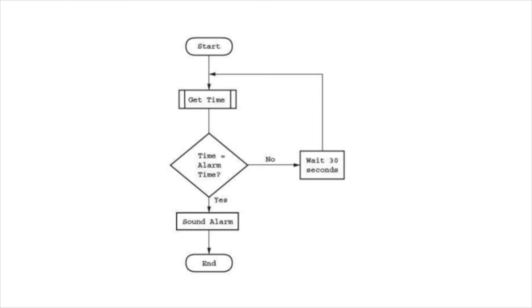We're going to have a decision where we say, is the time equal to the alarm time? If it is, then we sound the alarm and that's the end of the module. If it's not, we wait for a set number of time, normally around 30 seconds, and then we go back and get the time again. And then we check the whole process. So if you've got something similar to that, fantastic. If you haven't, just have a look and understand how the process of breaking the problem down into smaller chunks was achieved.